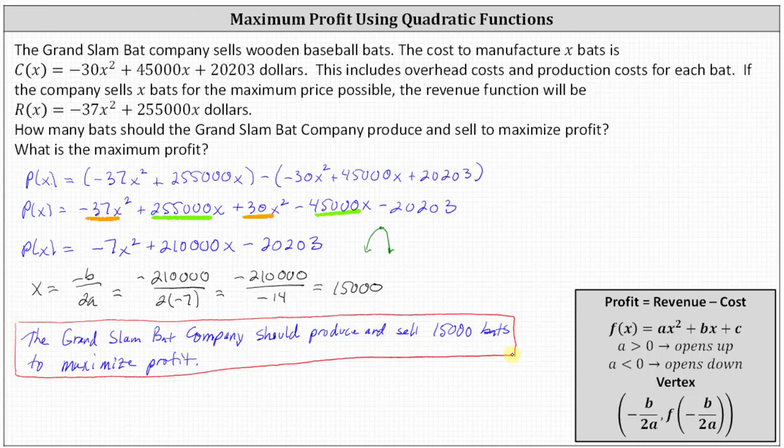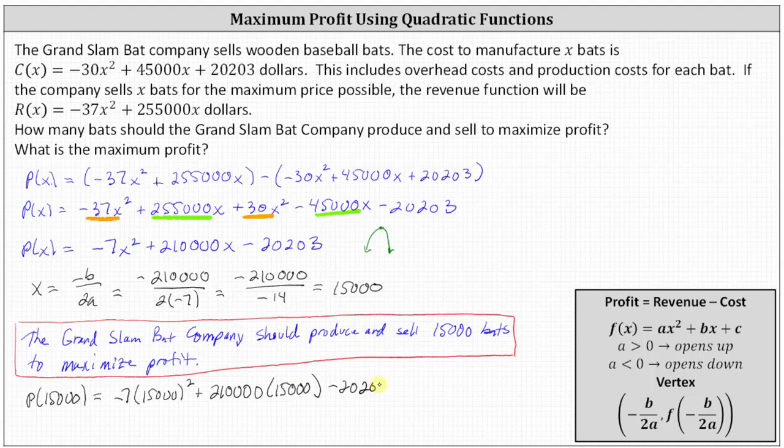And now for the second part, to find the maximum profit, we now need to evaluate the profit function at X equals 15,000. So the max profit will be given by P of 15,000, which is going to be equal to negative seven times the square of 15,000 plus 210,000 times 15,000 minus 20,203.